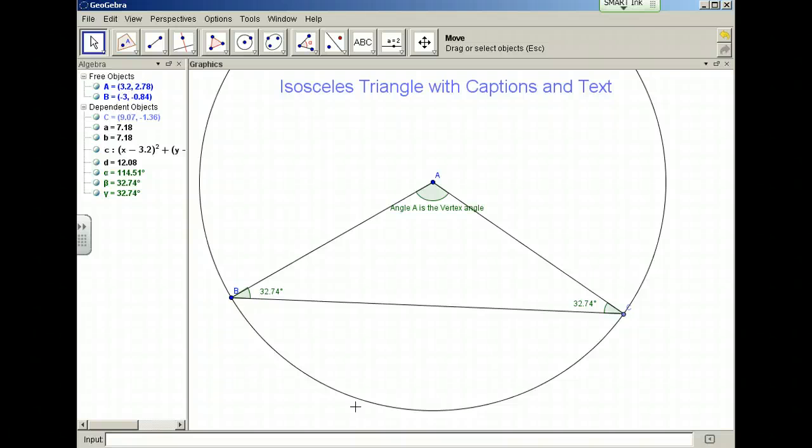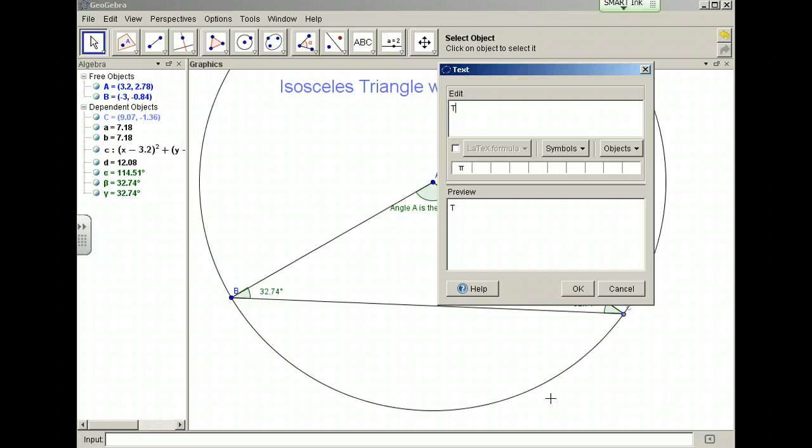So I'd like to use some text to state this. And so here's my text tool. I wish to place the text here. And my text will say the base angles of this isosceles triangle are measure.